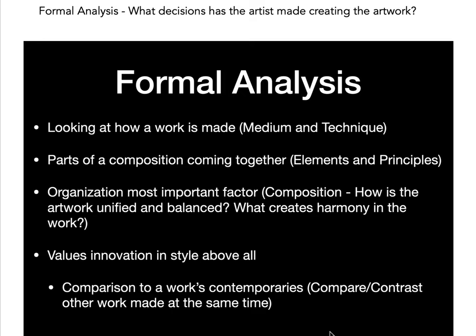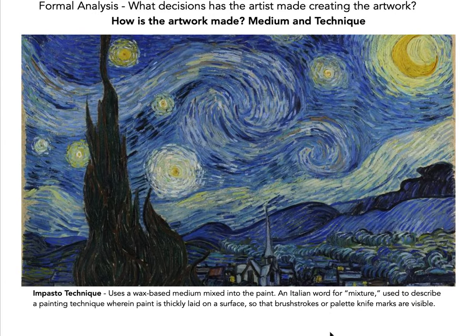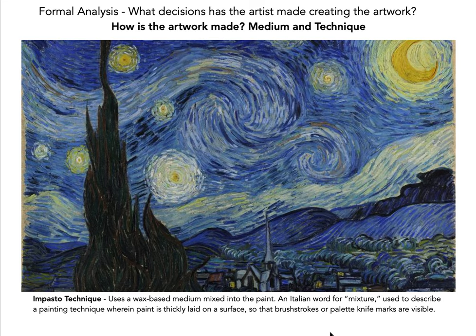Now we're going to look at Vincent van Gogh's Starry Night as an example. How is the artwork made? Discussing the medium and the technique: this is an oil painting, but just saying oil paint doesn't describe enough, because oil paint can be applied in a multitude of ways and the texture can be very different. Van Gogh is known for using the impasto technique. Impasto uses a wax-based medium mixed into the paint — it's actually an Italian word for mixture — and it describes a painting technique where paint is thickly laid on the surface so that brush strokes or palette knife marks are visible.